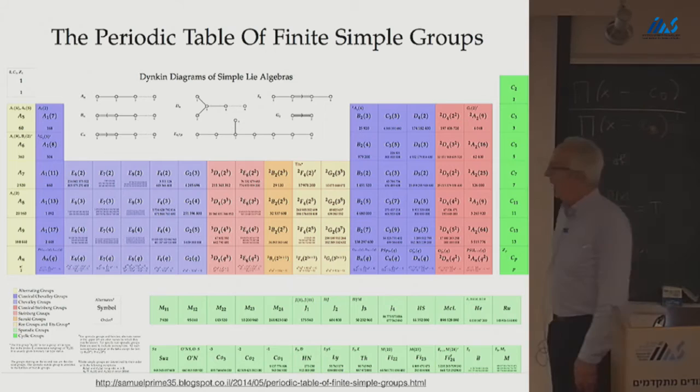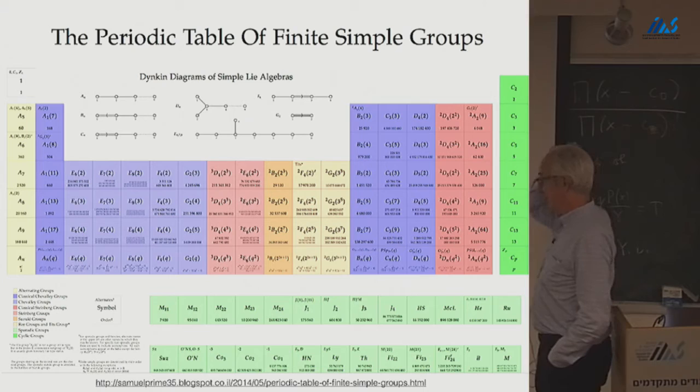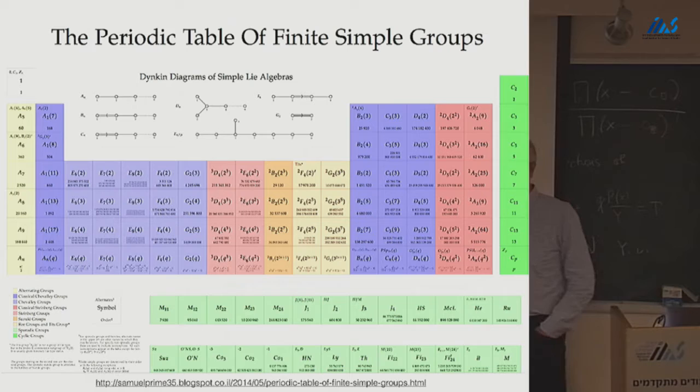All right, so talking about exotic things, here's, I got this off of some goofy web page. But you can find all sorts of interesting things on the internet. And so one of the great accomplishments of 20th century mathematics is the classification of finite simple groups. All know what a finite group is. A simple finite group is like a prime number. It's something that can't be decomposed into smaller groups.